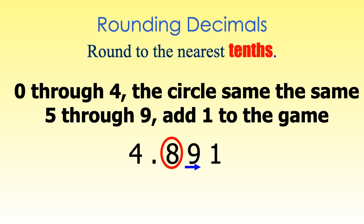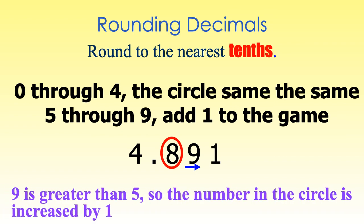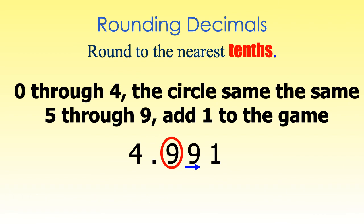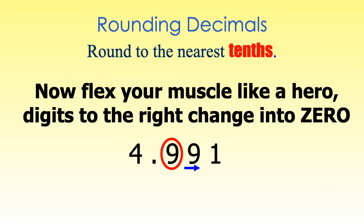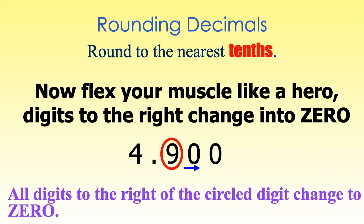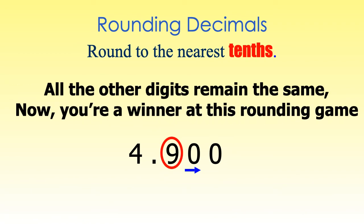If the number is zero through four, the circle stays the same. If the number is five through nine, we add one to the game. The digit nine is greater than five, so the number in the circle is increased by one. When we add one to eight, we get the digit nine. Now the next step tells us to flex our muscles like a hero — the digits to the right change into zero. The digits nine and one to the right of our circle digit all change into zeroes. The last step tells us all the other digits remain the same. Now we're a winner at this rounding game.